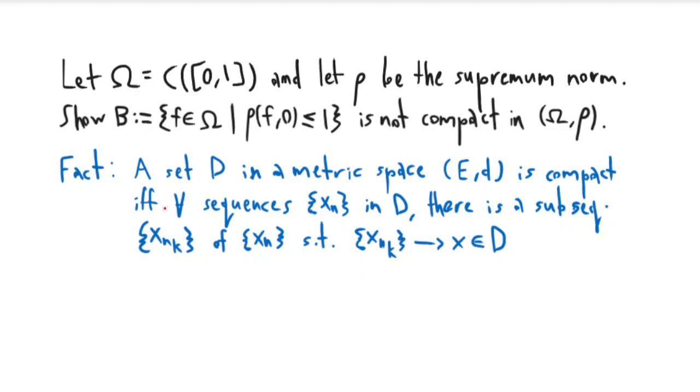This is true in the real numbers but it's also true in an arbitrary metric space. So we're going to use this. We'd like to consider the sequence fn given by fn = t^n.